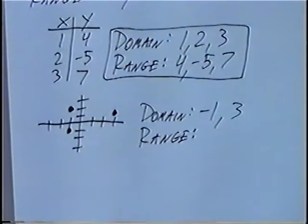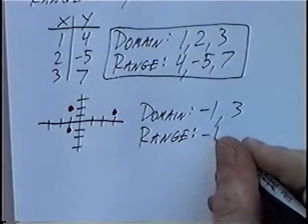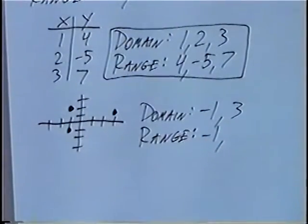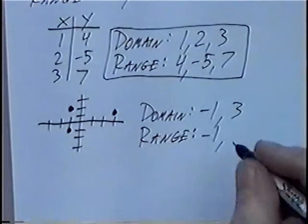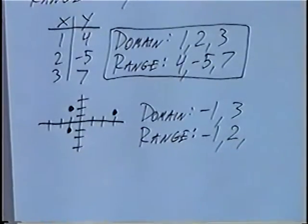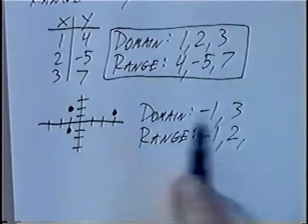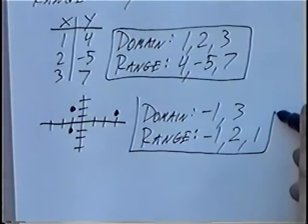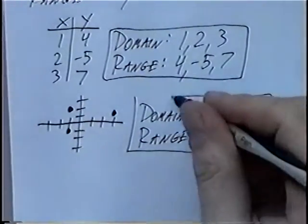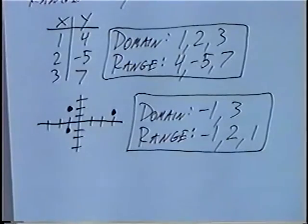Likewise the range. The first point's Y-value was negative 1. The second point's Y-value was 2. And the third point's Y-value was positive 1. So our final answer: domain is negative 1 and 3, and the range is negative 1, 2, and 1.